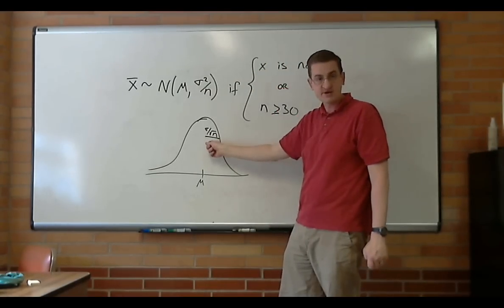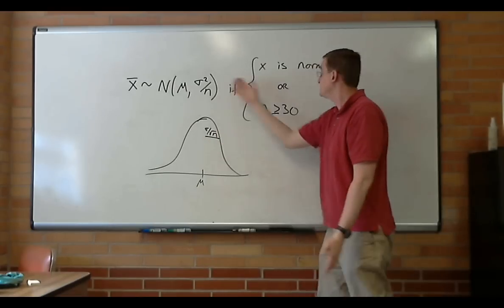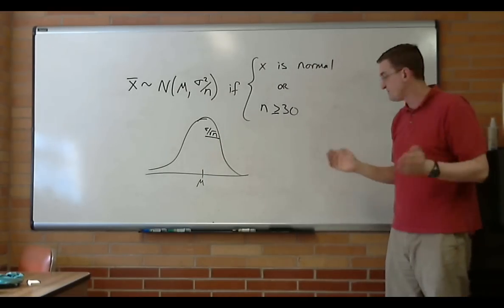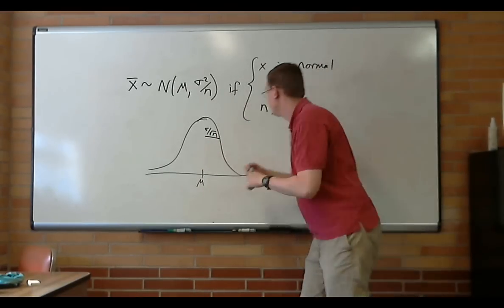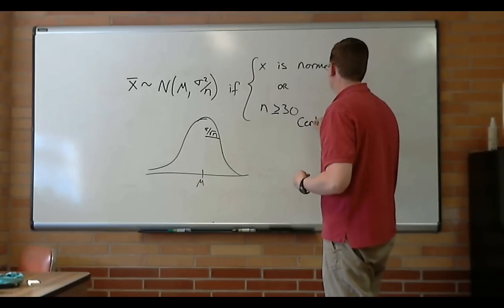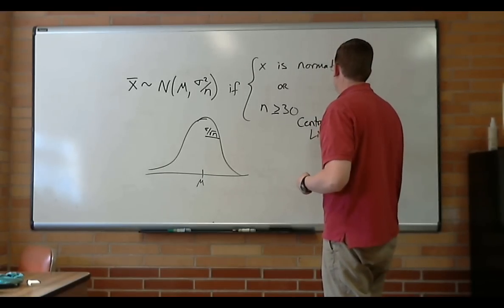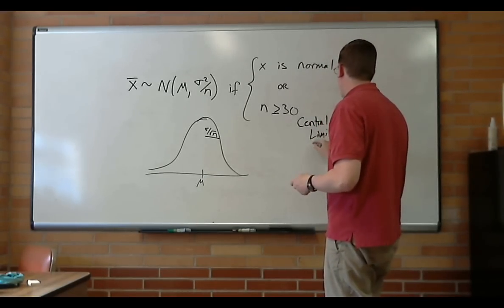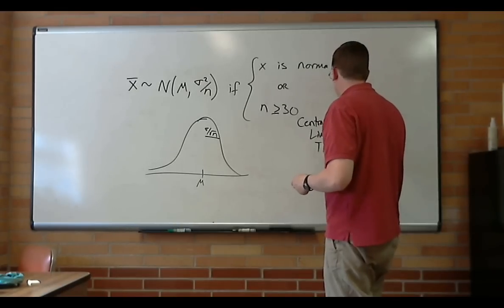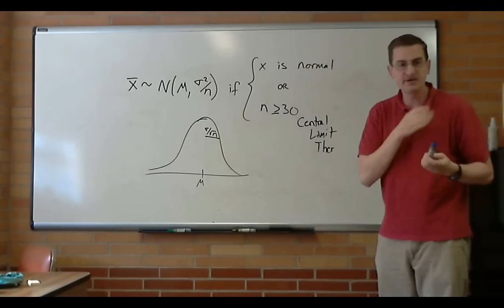The σ over the square root of n is our standard deviation. So this guy is a very powerful thing. This comes from the Central Limit Theorem, and what I just showed you with that applet is how the Central Limit—I can't spell and write at the same time.